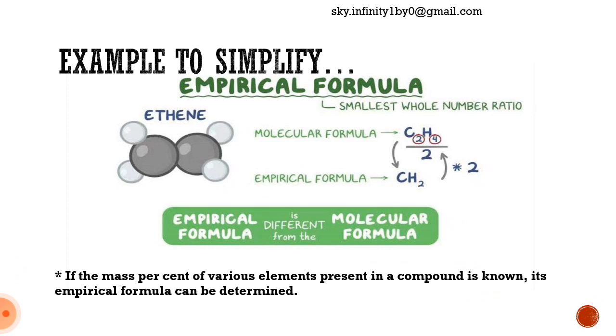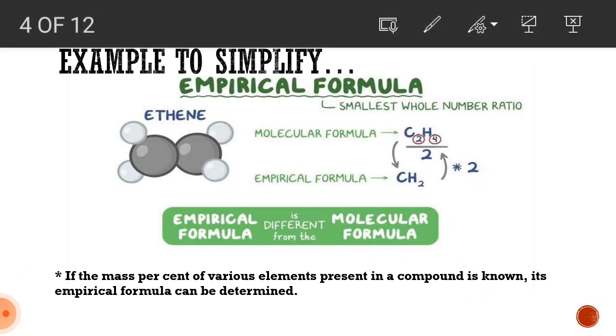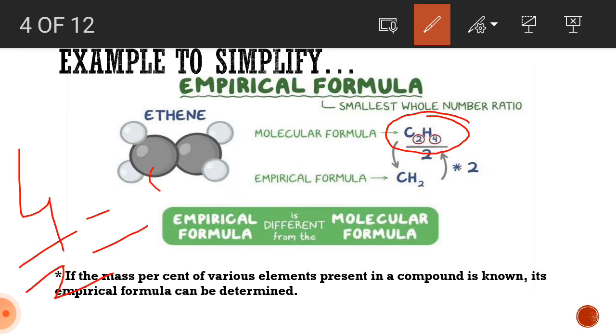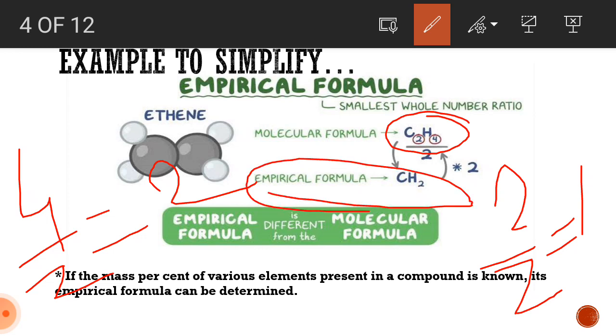This is an example of molecule of ethene which shows that empirical formula is not equal to the molecular formula. Ethene, as we all know, has a double bond between its carbon atoms and the molecular formula for ethene is C2H4. If you divide 4 by 2, the answer is 2. And if you divide 2 by 2, the answer is 1. So, this is the ratio. If you apply it for the molecule of ethene, then you will get empirical formula as C1H2.